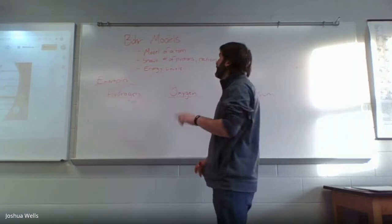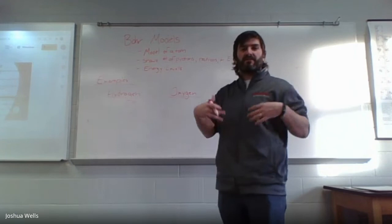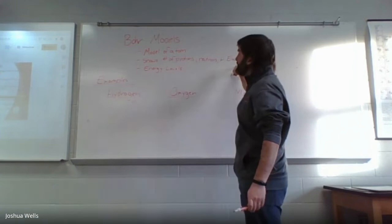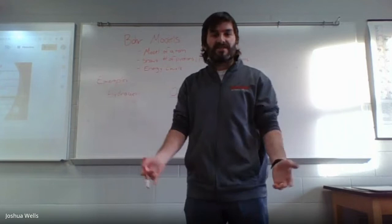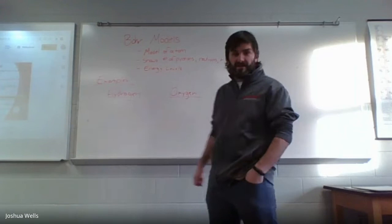In a Bohr model, we are simply making a model of the atom. We've already kind of done this, but now we're going to give it a little bit more structure. We are going to show the number of protons, neutrons, and electrons that the atom has, and we are going to show what we call energy levels. You're going to see what those are in a second.